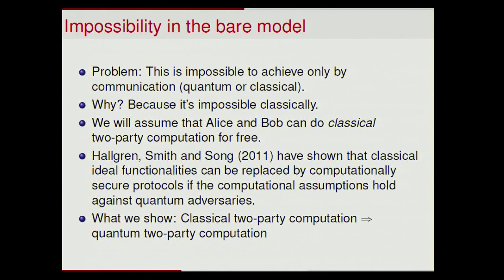Now, of course, for this to eventually be useful, we'd have to have a result saying that a classical ideal functionality can be replaced by an actual protocol secure against quantum adversaries. Fortunately, Hallgren, Smith, and Song have shown that if you have a classical ideal functionality, you could replace it by a computationally secure protocol as long as the computational assumption holds against quantum adversaries. So that justifies our use of classical ideal functionalities in this quantum setting. In one line: classical two-party computation implies that you can do quantum two-party computation — as opposed to what you might think a priori, that doing computation on quantum data might require a fully quantum cryptographic primitive. We show that's not the case.